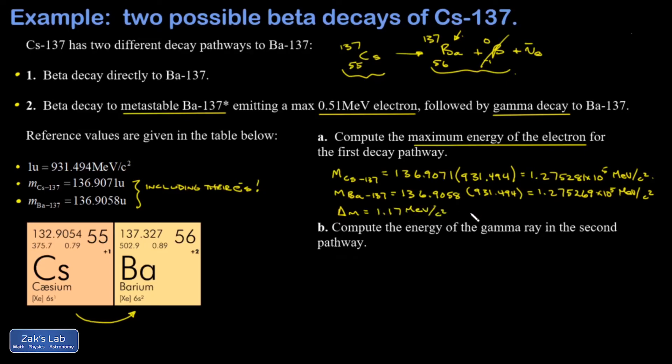The wonderful thing about these units is we can immediately get the energy equivalent of that missing mass. So I plug in to E = mc², and the mass is 1.17 MeV per c squared multiplied by c squared, and you've got your energy in MeV. So I get 1.17 MeV.